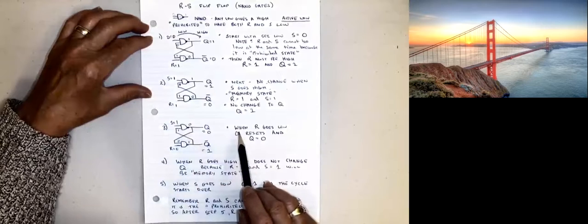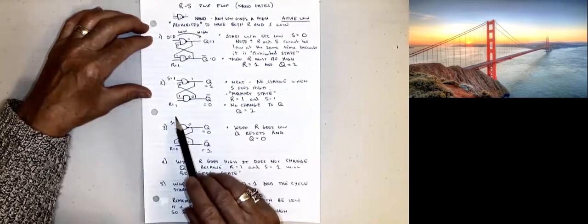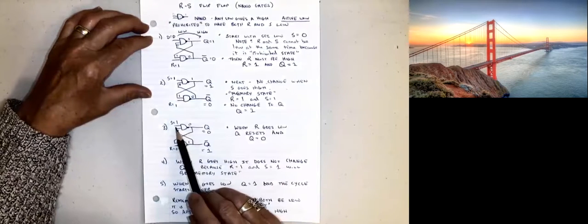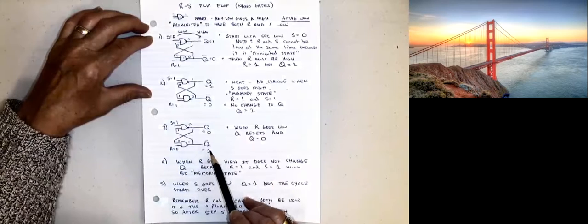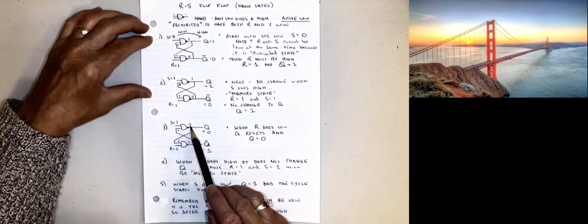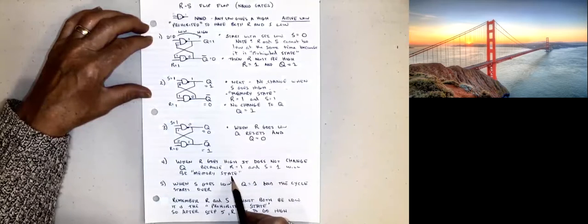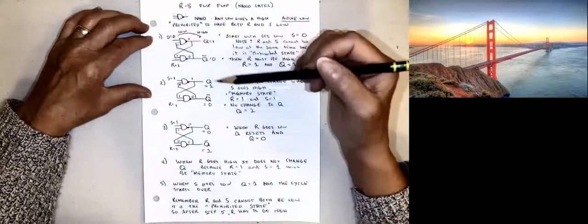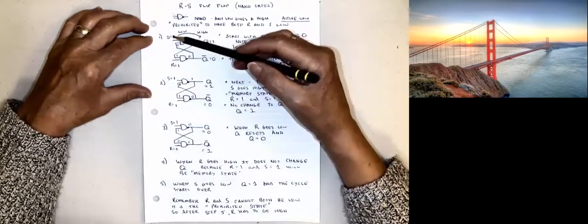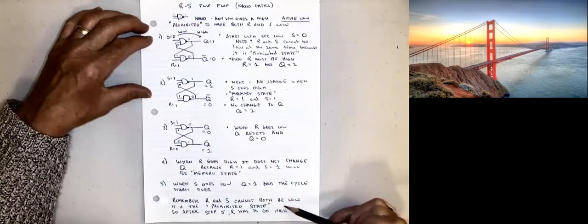Then we're going to reset it. Now we can change R to low while S stays as high. Any low gives us a high, and Q bar would go to high. That high and the other high give us a low, and Q would be low. So again, when R equals 1 and S equals 1 we are in memory state. To start over, S would go back to low and we begin the cycle again. We can never have R and S both low because this is active low, and we would be in the prohibited state.